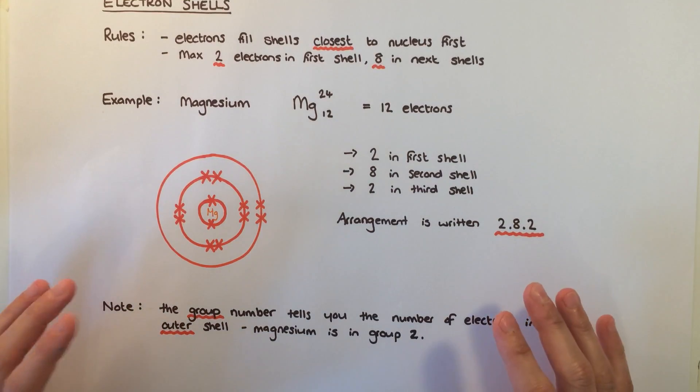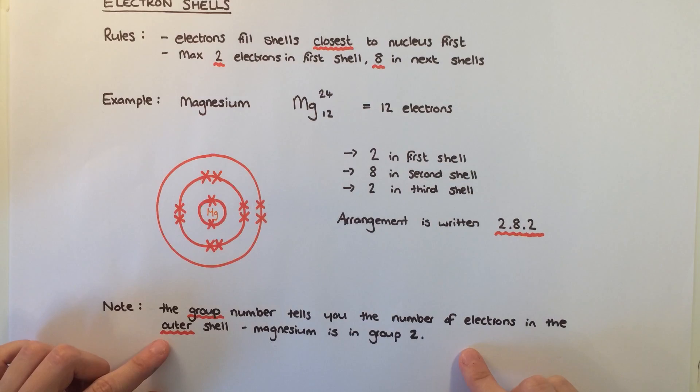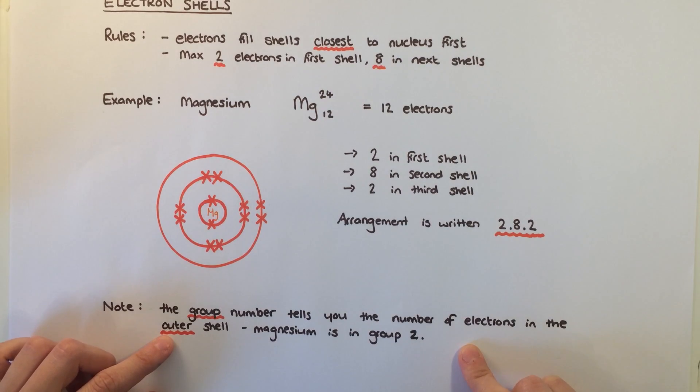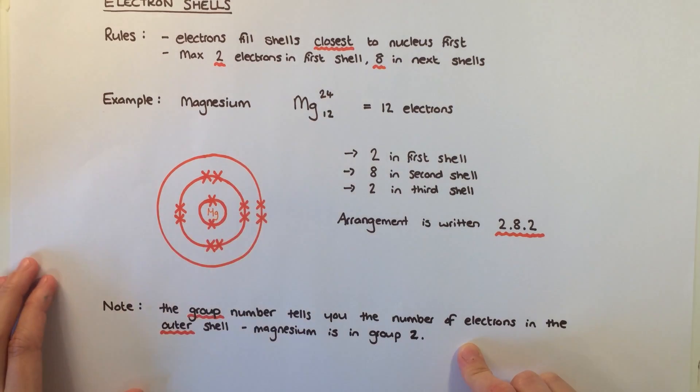Finally, one cool thing to note is that the group number in the periodic table tells you how many electrons are in the outer shell. Magnesium is in the second column or group and therefore has 2 electrons in its outer shell.